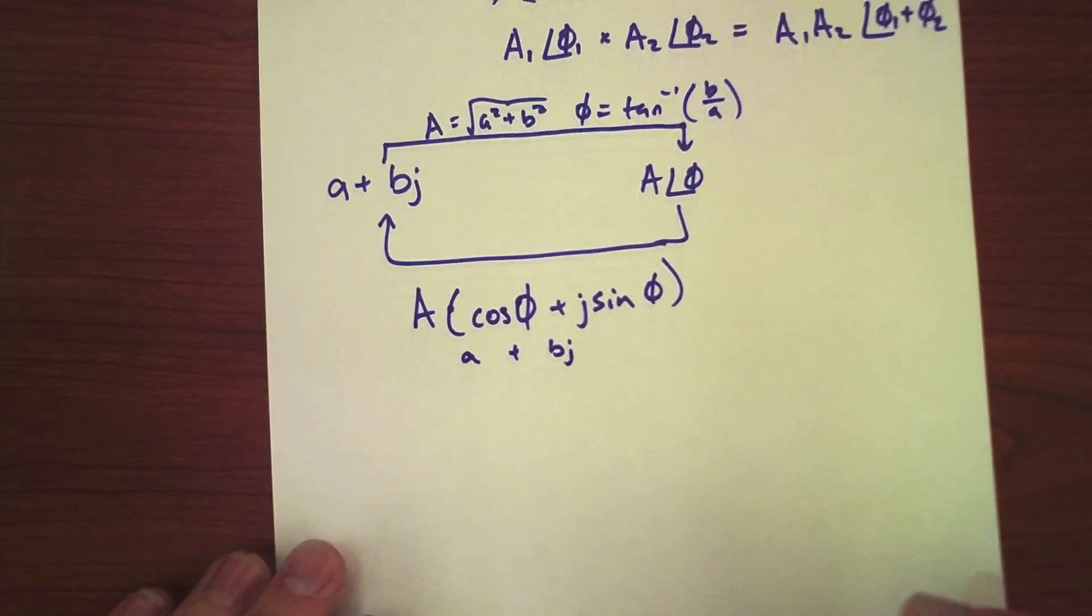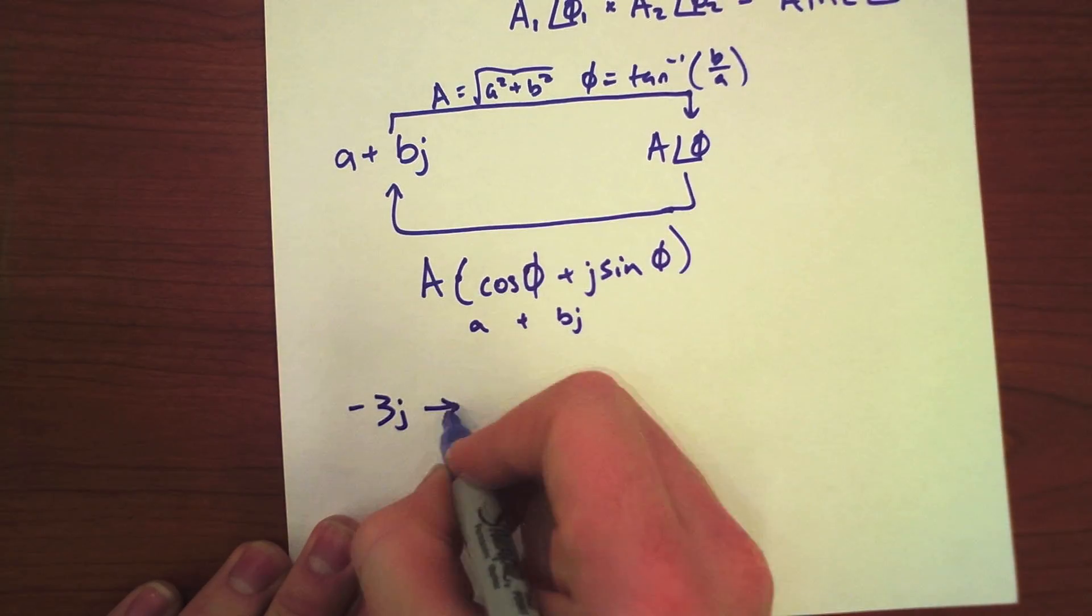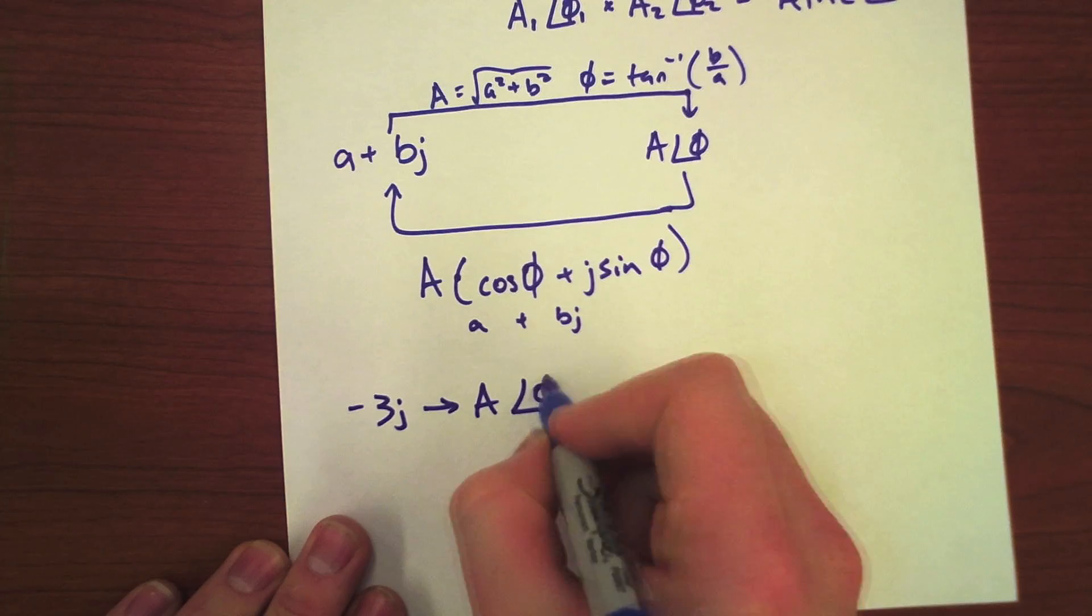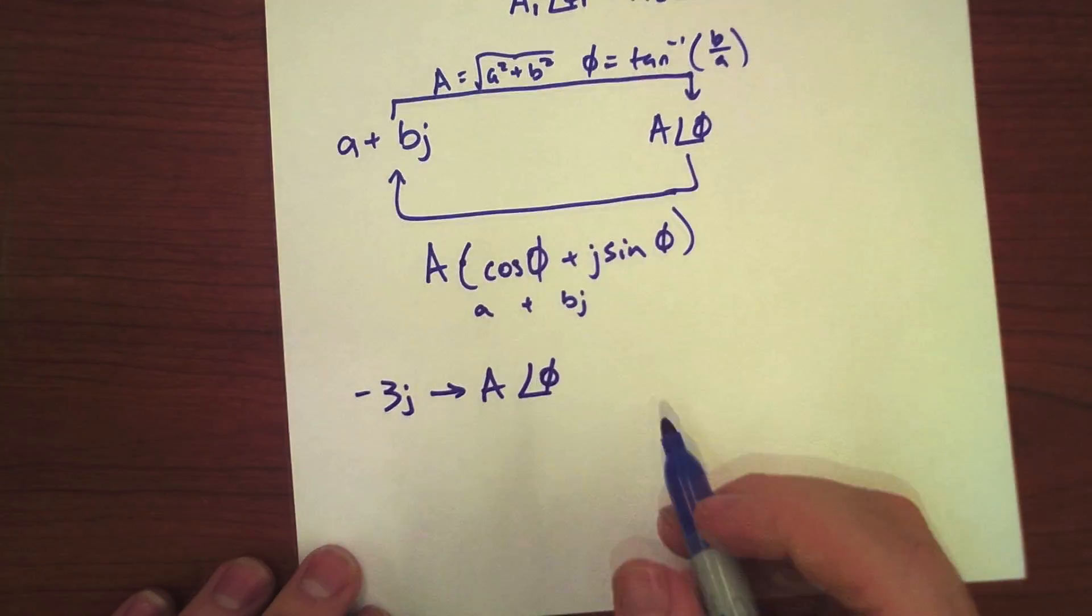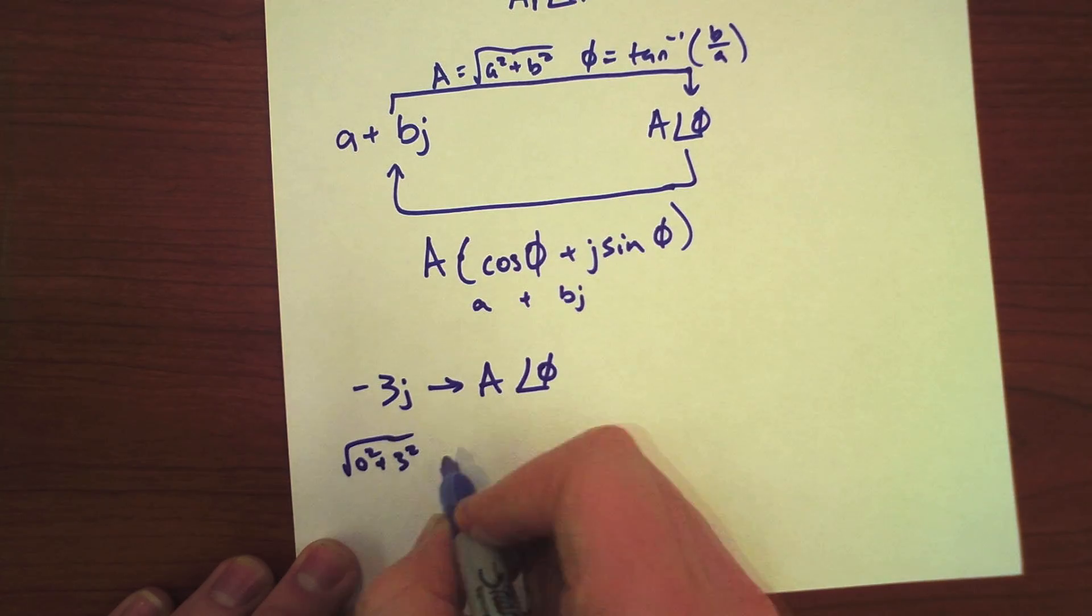Let's do a brief little example. How do we go from minus 3j to a angle phi? Well, our magnitude is just simply going to be 0 squared plus 3 squared, just 3.